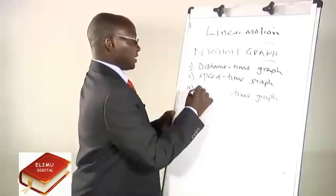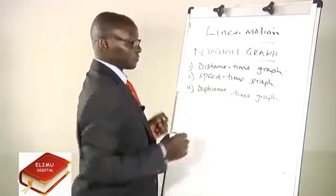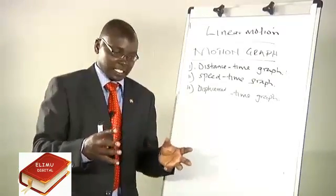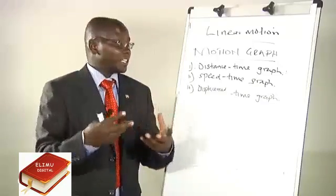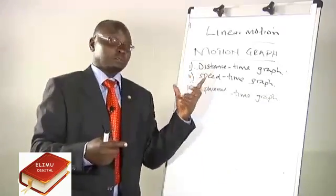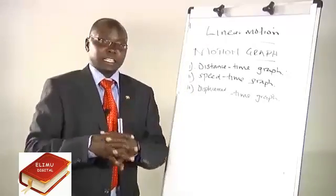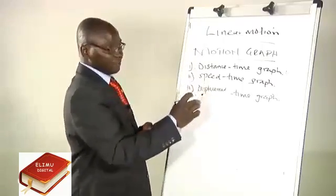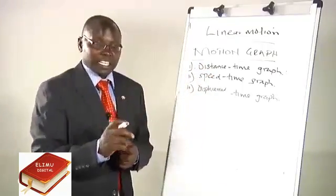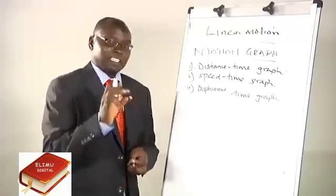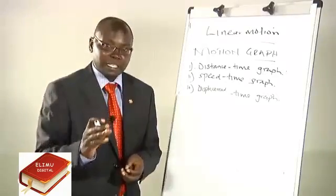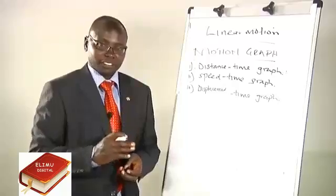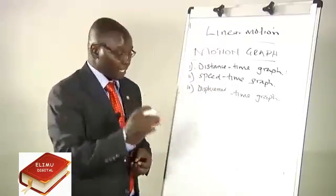The third graph type is the displacement-time graph. In physics, displacement does not mean the same as distance. Both are measured in meters, but distance is the total length of the path taken by a body, while displacement is a vector quantity — distance in a specified direction — so we must give the magnitude and the direction.